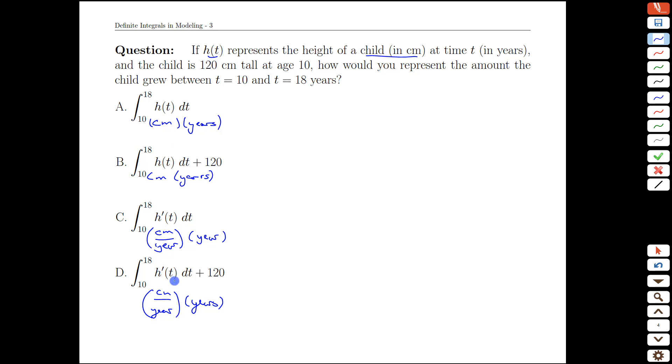If we consider those options and we imagine what we're trying to calculate here, the amount the child grew would be in centimeters. No question at all, it's just a height difference. And so these units here don't make any sense. Centimeters times years, I don't know what those represent in this scenario. However these formulations down here do give us centimeters.